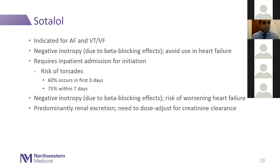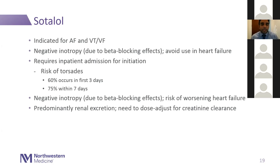Moving on to sotalol. It's indicated for AFib and can also be used for VT, PVCs, or VF. Sotalol has a beta-blocking action in addition to being a class 3 antiarrhythmic, causing some negative inotropy — so avoid in patients with heart failure. This medication requires inpatient admission for initiation because of the risk of torsades and QT prolongation. 60% of torsades events happen in the first three days and 75% within seven days of being on the medication. It is predominantly renally excreted, so careful dose adjustment based on creatinine clearance is essential to reduce pro-arrhythmia risk.